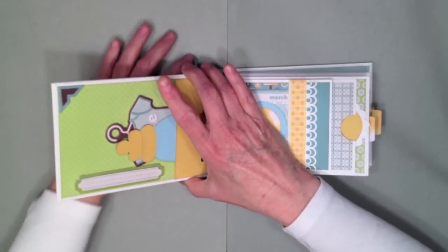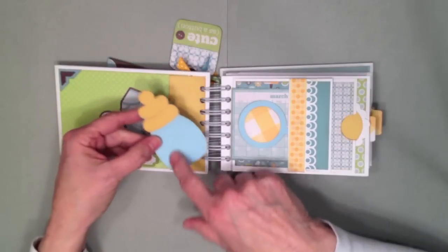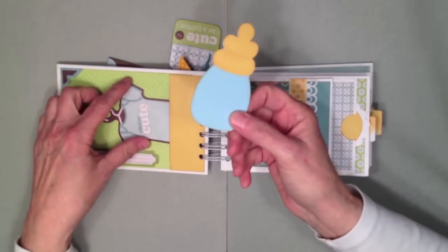The way the pages work, you open it up here and on the inside front cover I did make a little pocket here. I used my Cricut to cut out some little shaped tags. This is a baby bottle, really it is a baby bottle.